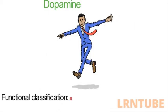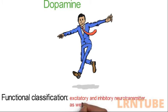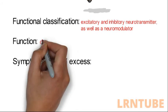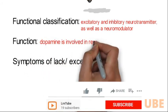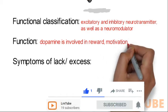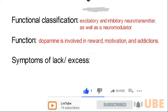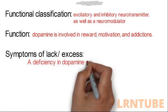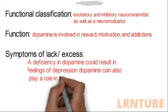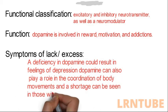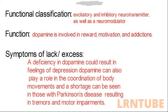Dopamine is commonly known as the feel-good neurotransmitter. It is both an excitatory and inhibitory neurotransmitter, as well as a neuromodulator. Dopamine is involved in reward and motivation and can also cause addictions. A deficiency in dopamine can result in feelings of depression, and since it plays a role in coordination of body movements, a shortage can cause tremors and motor impairment, as seen in people with Parkinson's disease.